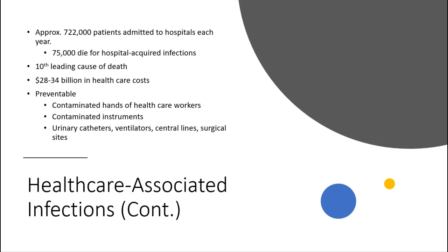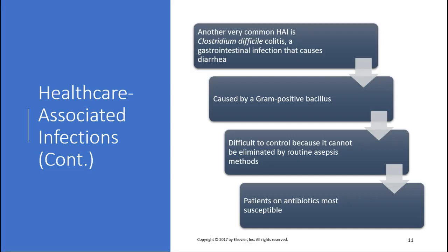Wear gloves and take your gloves off appropriately. Contaminated instruments are another source, as well as urinary catheters, ventilators, central lines, and surgical sites — all places where a patient can become infected. Another very common HAI is Clostridioides difficile colitis — a gastrointestinal infection that causes diarrhea. It's difficult to control and cannot be eliminated by routine aseptic methods. Patients on antibiotics are the most susceptible.